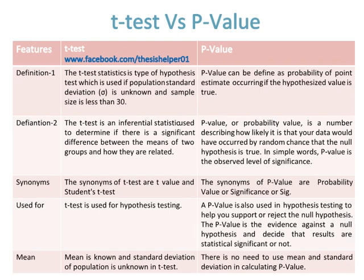The p-value can be defined as the probability of a point estimate occurring if the hypothesized value is true. Definition two of the t-test: it is an inferential statistic used to determine if there is a significant difference between the means of two groups and how they are related. The p-value, or probability value, is a number describing how likely it is that your data would have occurred by random chance given that the null hypothesis is true.